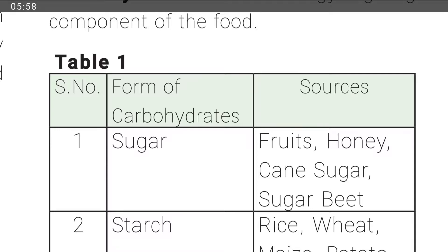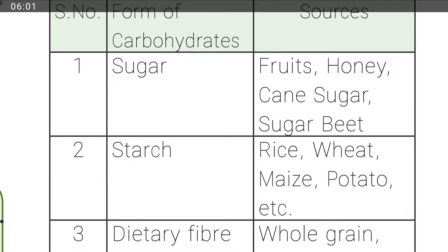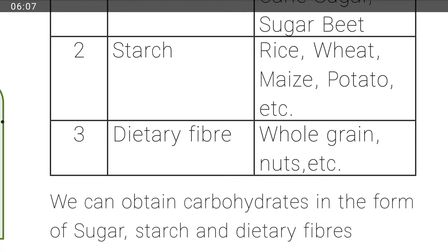Other carbohydrate sources include rice, wheat, maize, and potato. Dietary fiber comes from whole grains. So we can obtain carbohydrates in the form of sugar, starch, and dietary fiber. From these sources we are getting carbohydrates.